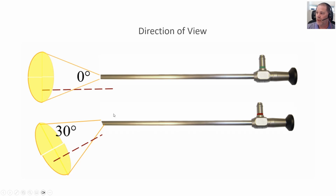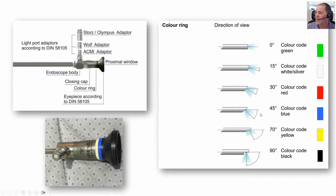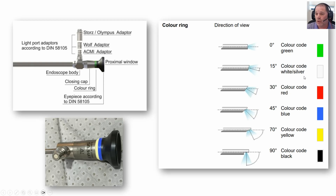Looking at this particular chart, we also have 45, 70, and 90 degrees. The color coding sequence here is not a universal standard — this is important — so different manufacturers may use different colors. A green for a Smith & Nephew telescope might mean something different for an Olympus telescope. So we don't want to assume when you put it in a set in prep and pack that this is zero degree or a 30.